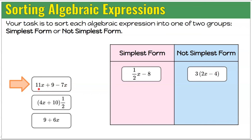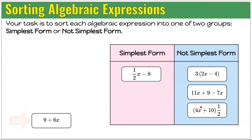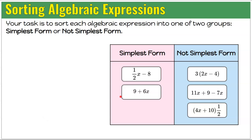Next: 11x add 9 subtract 7x has two like variable terms that could be combined, so it is not simplest form. Then: the quantity 4x plus 10, multiplied by 1 half — since it has parentheses, it is not in simplest form. Finally: 9 add 6x has a constant term and a variable term, no parentheses and no like terms, so it is in simplest form.